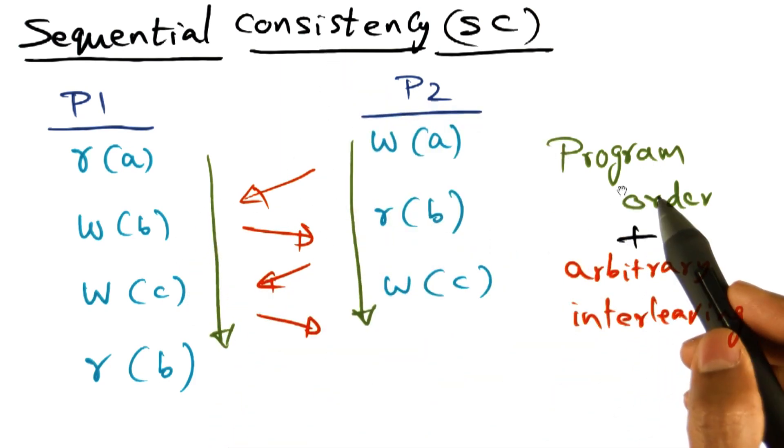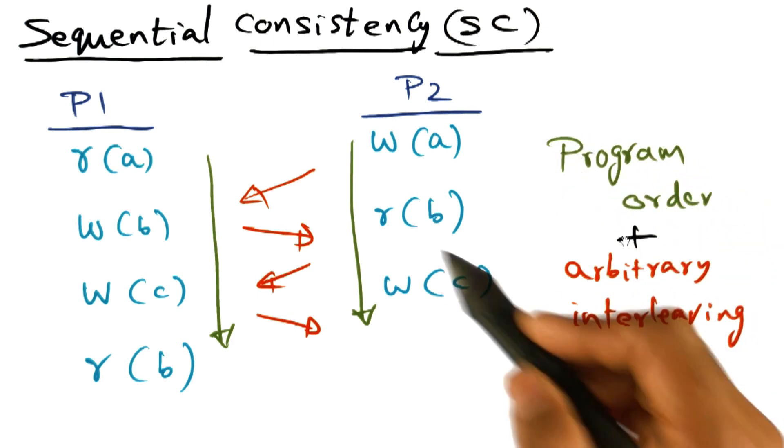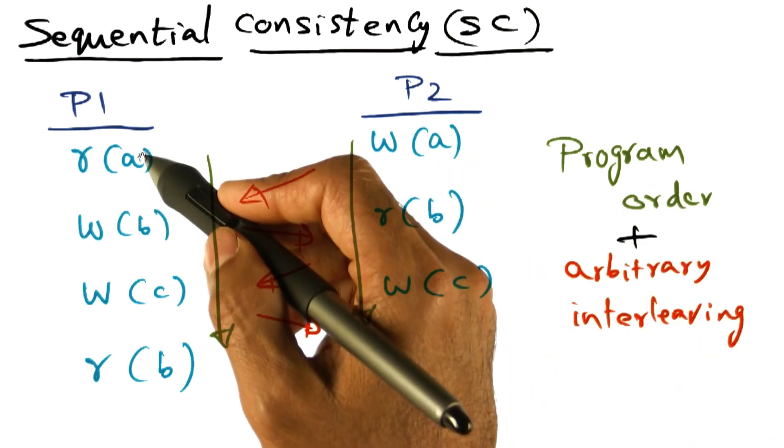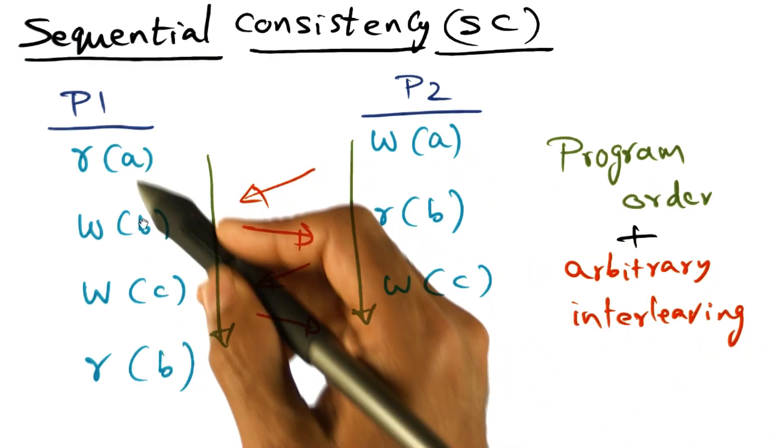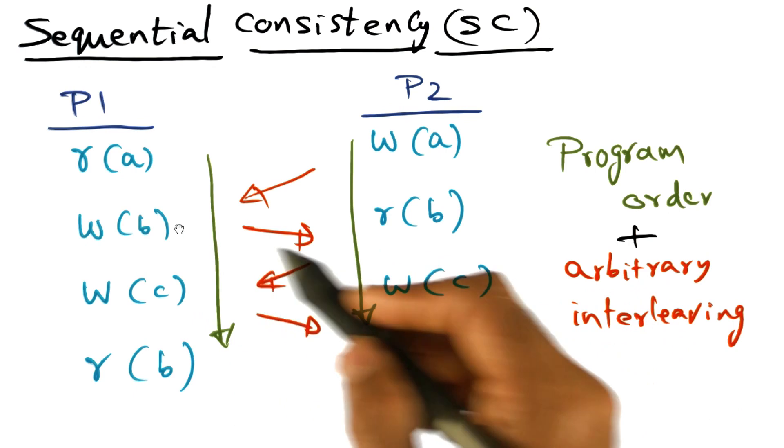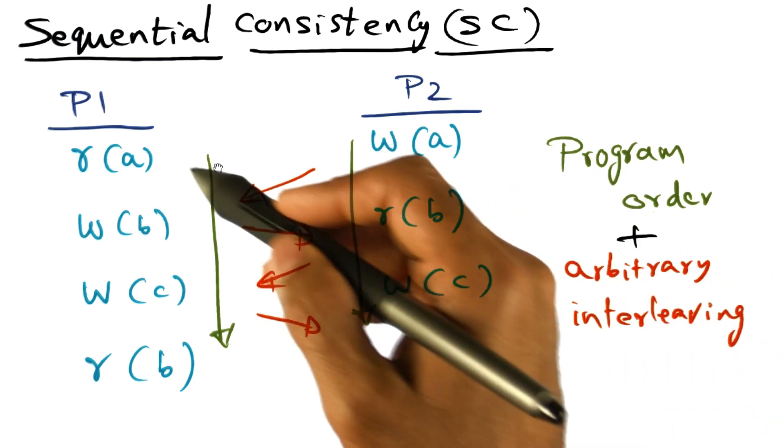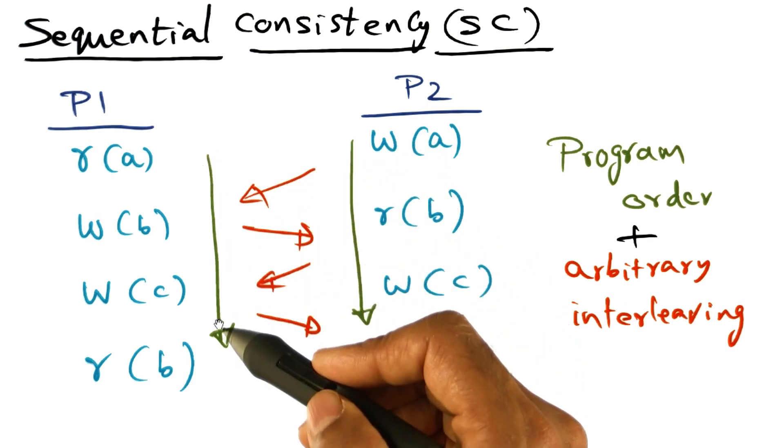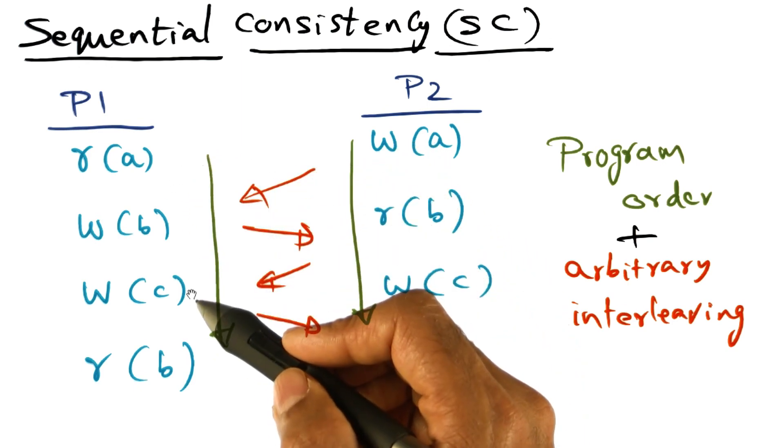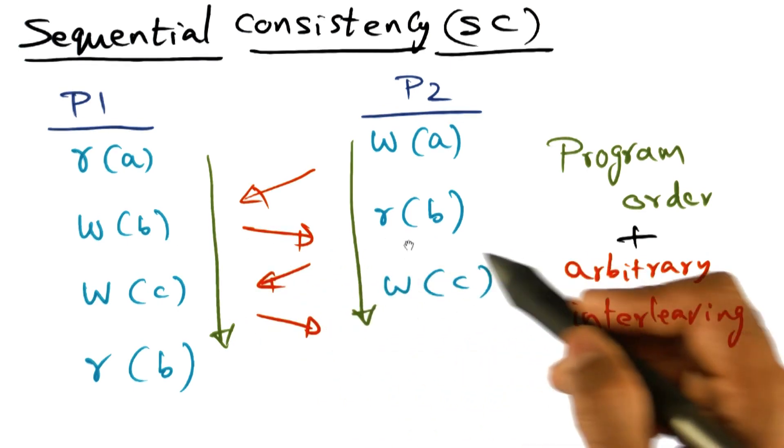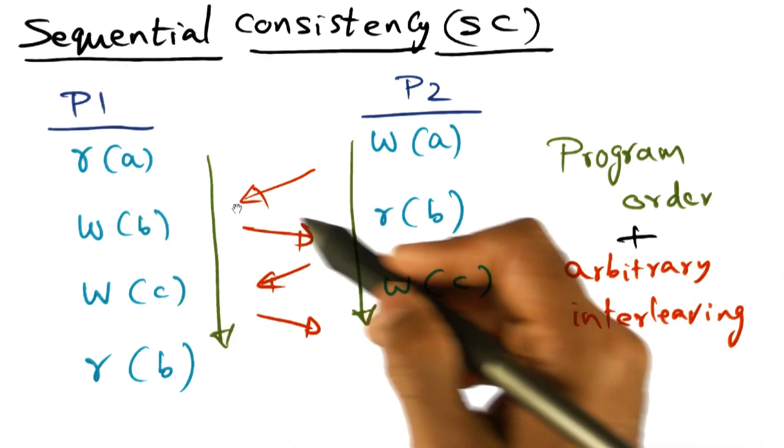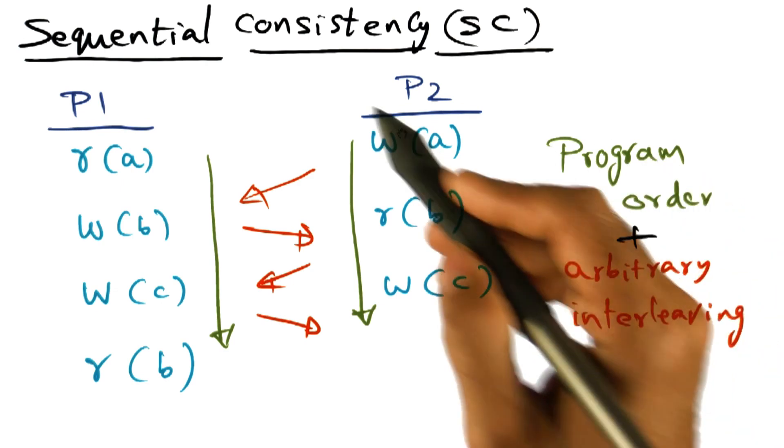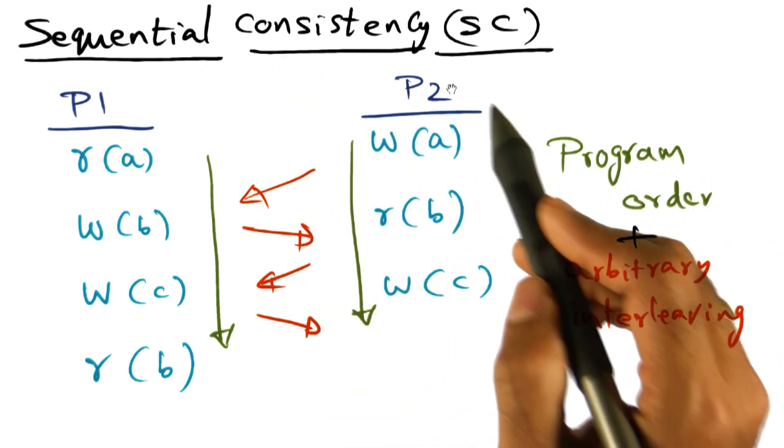Now, which has two parts to it. One is the program order. That is the order that you see textually in every individual process. I'm showing you two here, but you can have N of these processes. But in each one of these processes, the textual order in which memory accesses are generated, they're going to be satisfied. That's the program order. On the other hand, the interleaving of these memory accesses across all the processes is going to be arbitrary. So those are the two properties of the sequential consistency model.